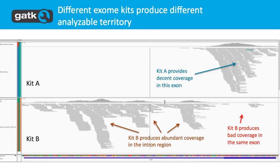Whole exome sequencing also comes in different shapes. The way it is usually designed is by designing bait sets that are supposed to be complementary to the regions we are trying to sequence. Some bait sets are better than others, or they're designed to capture certain areas better than others, so different kits will have different affinities for capturing different regions of the genome. For example, we may have an easy time capturing one particular exon with kit A but not another area, while kit B captures an intronic region but not the exon. So that's one thing to keep in mind — we actually have coverage in different areas depending on the kit used.